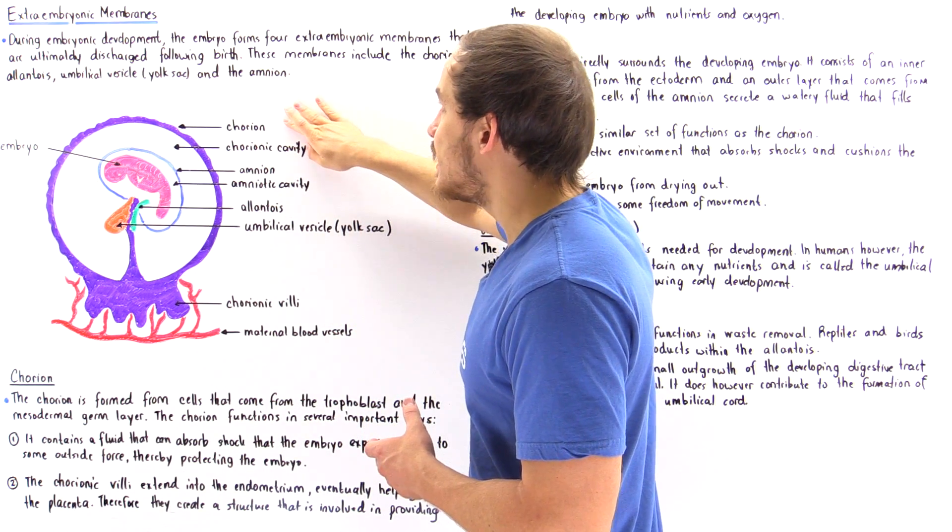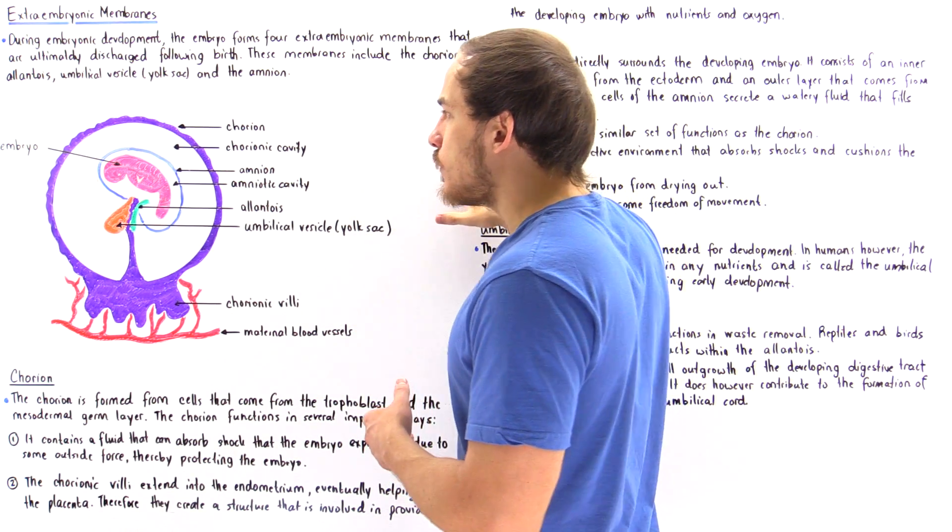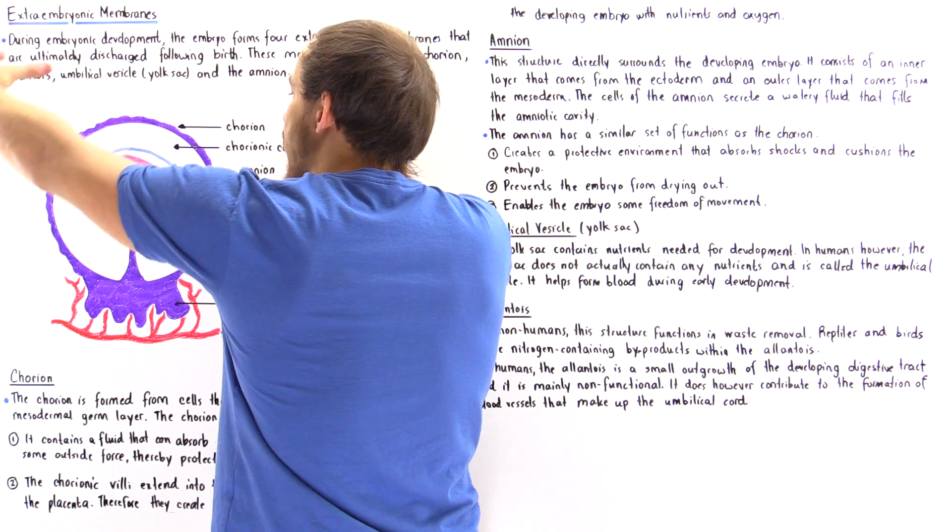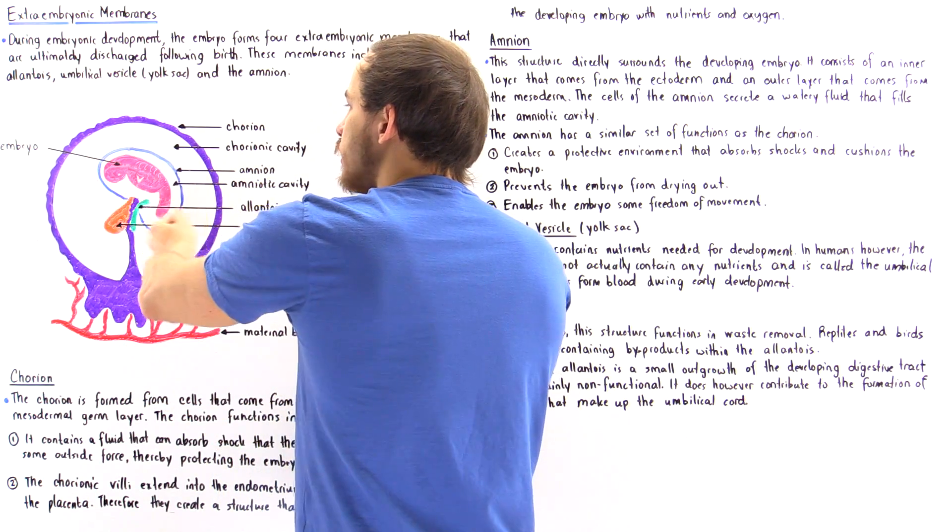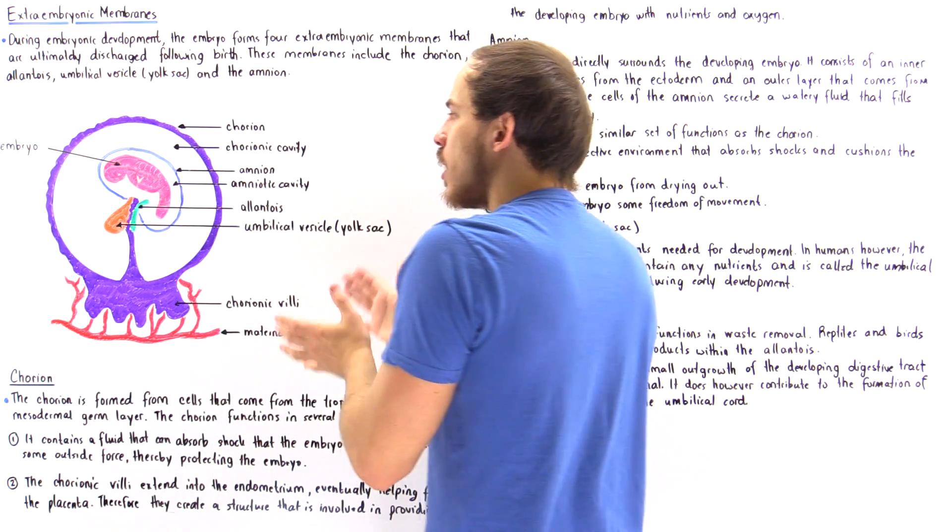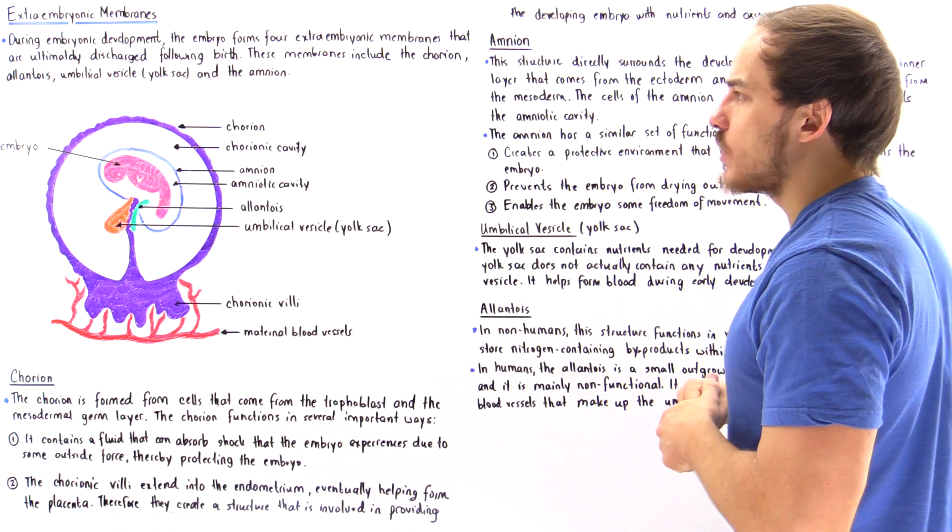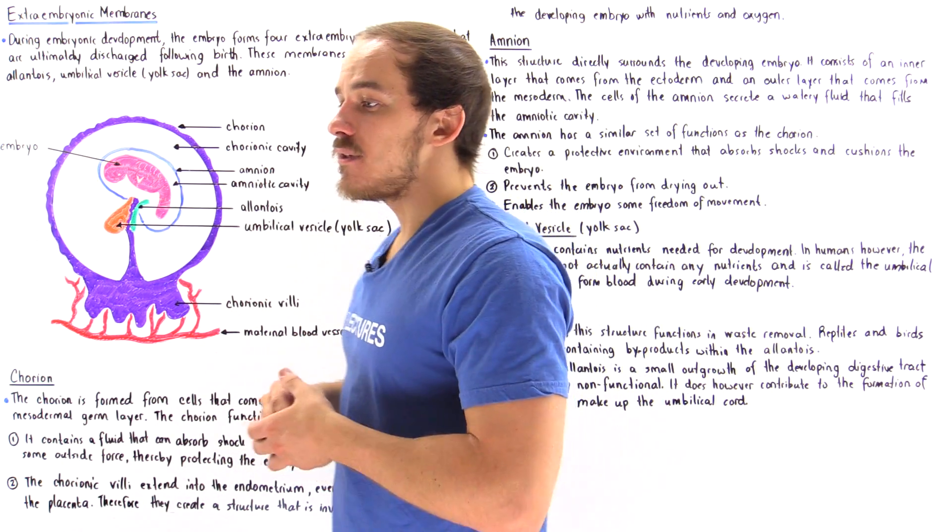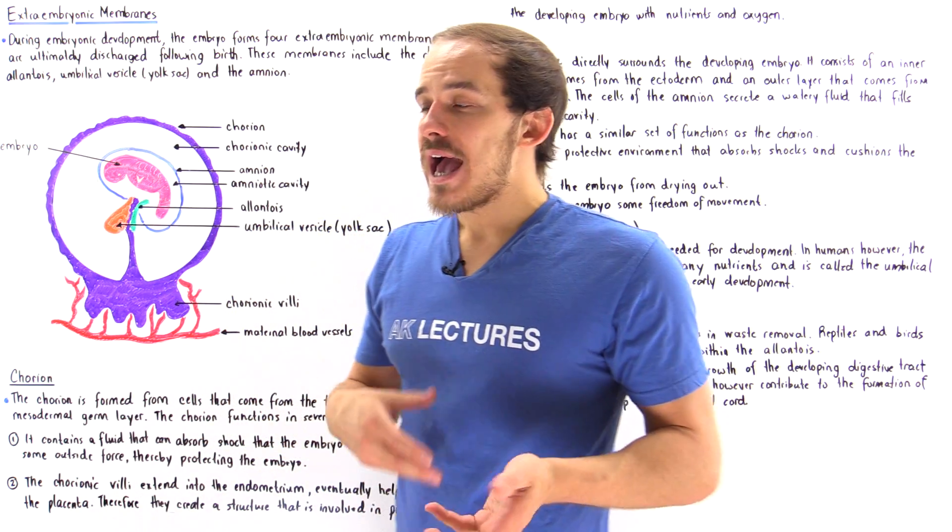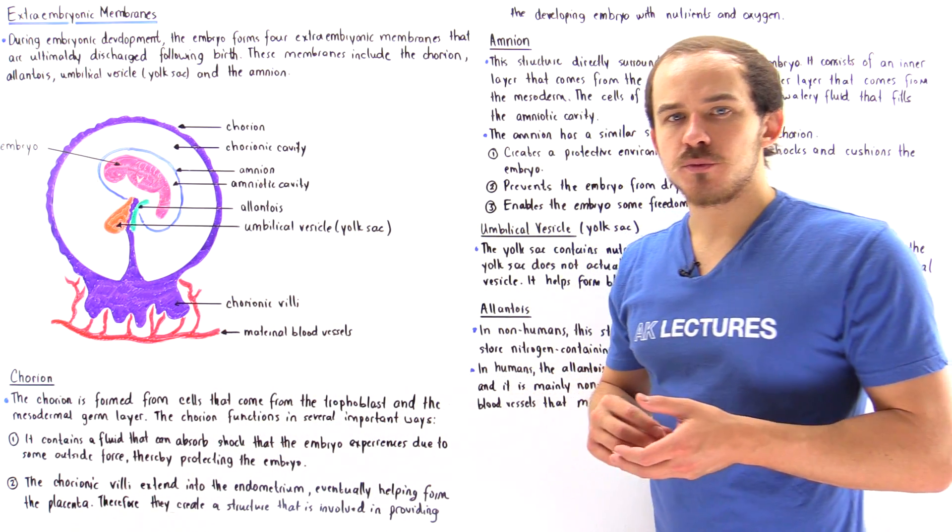And notice that the chorion is the extra embryonic membrane that encloses not only the embryo but also the other three extra embryonic membranes. So the chorion consists of cells that come from the trophoblast as well as the mesoderm germ layer.